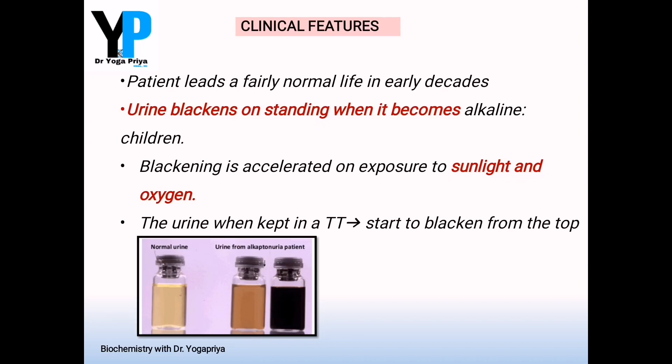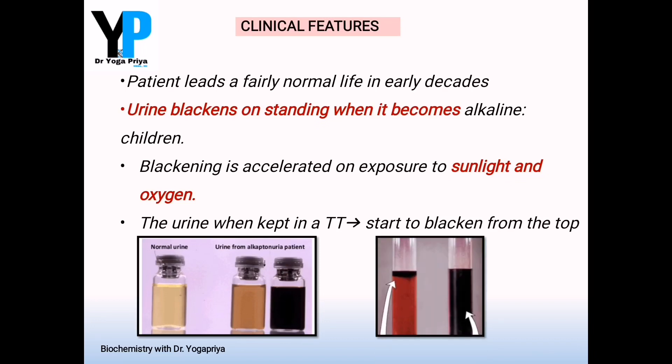This first image shows the urine sample collected from a normal person and the next one shows the urine sample from an alkaptonuria patient. The first bottle image is taken immediately after collection and the second one is after a few hours of collection where the darkening sets in completely. In this image you can see that within a few minutes the darkening starts appearing from the top and proceeds to the bottom, and within two hours complete darkening of the sample is visible.